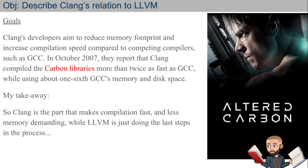Clang's developers aim to reduce memory footprint and increase compilation speed compared to competing compilers such as GCC. In October 2007, they reported that Clang compiled the Carbon libraries more than twice as fast as GCC, using only about one-sixth of GCC's memory and disk space. My takeaway is that Clang is the part that makes compilation fast and less memory demanding, while LLVM handles the last steps.